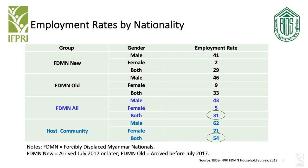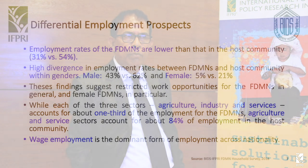Labor force participation is the intention to work. The actual work is the employment rate, and in that case one can see that for FDMNs it is 31% compared to 54% in the case of the host community — the actual employment rate. These are the 15 and higher age individuals who had the intention to work and are now actually working. So there is a significant gap between the host community and the FDMN community.